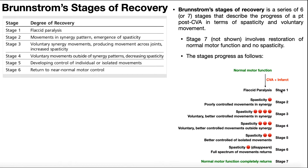You'll start at stage one and progress through these stages. This table shows six stages. Stage six is return to near-normal motor control. Stage seven is not shown in the table, but it's basically when there's complete restoration of normal motor function and no spasticity — normal motor function completely returns. Not everybody gets to stage seven, which is probably why it's not included in this table.